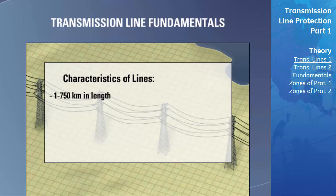Transmission lines consist of conductors that are supported by structures to hold the conductors high above the ground. These conductors are connected to the structure using devices called insulators. These insulators ensure that there is no electrical connection between the conductors and the supporting structure. The structure supporting the conductors can be constructed of wood, metal, or concrete.